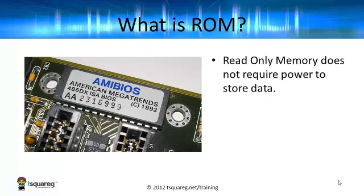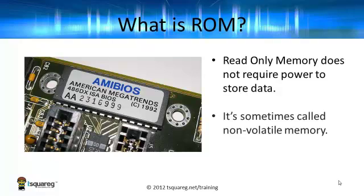ROM is read-only memory, and what's important about it is that it does not require power to store data — the data is already there. You can update it, but you don't need to have the power on constantly to keep the contents there. Because of that, it's sometimes called non-volatile memory. And as a matter of fact, RAM is often referred to as volatile memory. Try and remember that.